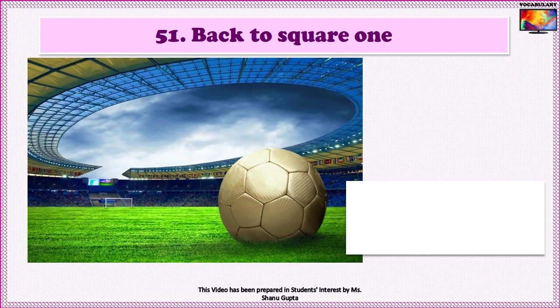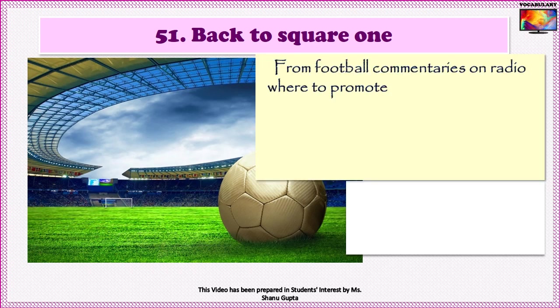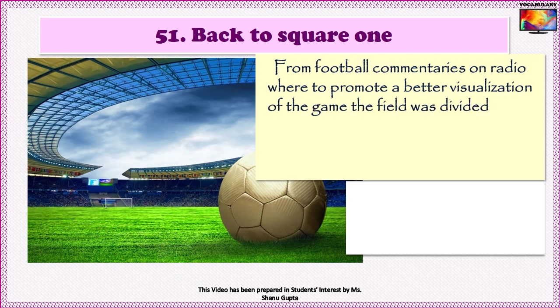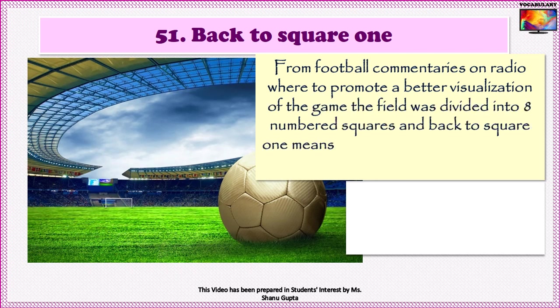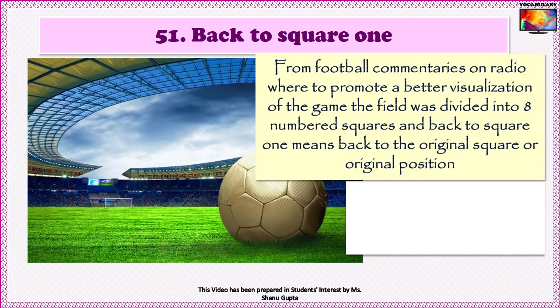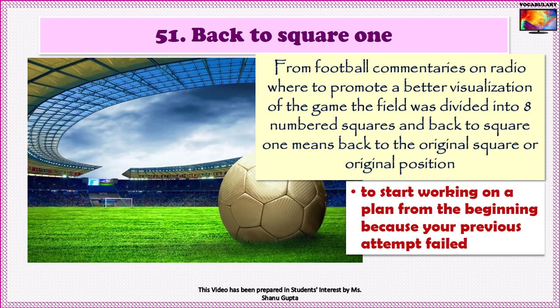Idiom No. 51 is 'Back to square one.' While no one is sure about the origin of this idiom, it is guessed to have originated from football commentaries on radio, where to promote a better visualization of the game, the field was divided into eight numbered squares — which were rather rectangles — and 'back to square one' meant back to the original square or original position. So, if you are back to square one, you have to start working on a plan from the beginning, because your previous attempt failed, and the progress you made is now wasted.